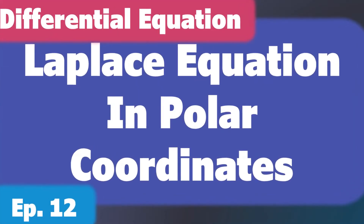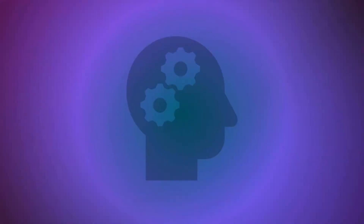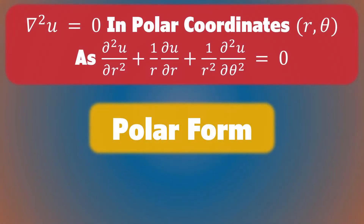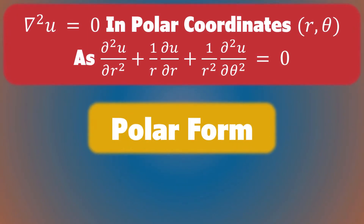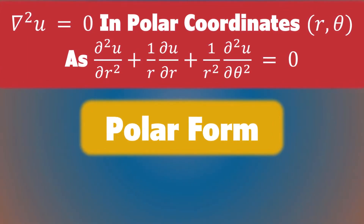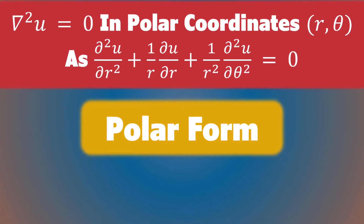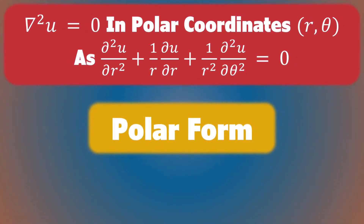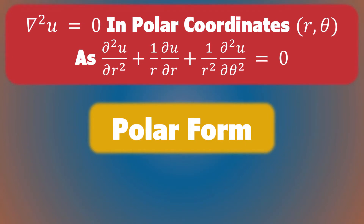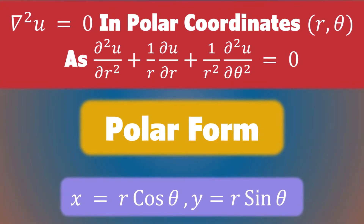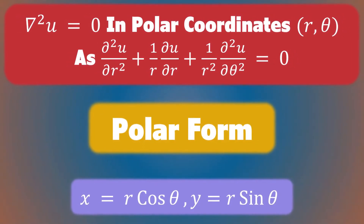Let's discuss Laplace's equation in polar coordinates. When we work with circular domains, it's more convenient to write the Laplace equation — Laplacian of u equals zero — in polar coordinates r, theta as: the second partial derivative of u with respect to r, plus one over r times the partial derivative of u with respect to r, plus one over r squared times the partial derivative of u with respect to theta, equals zero. Here u is a function of r and theta, and the link between polar and Cartesian coordinates is x equals r cos theta and y equals r sine theta.